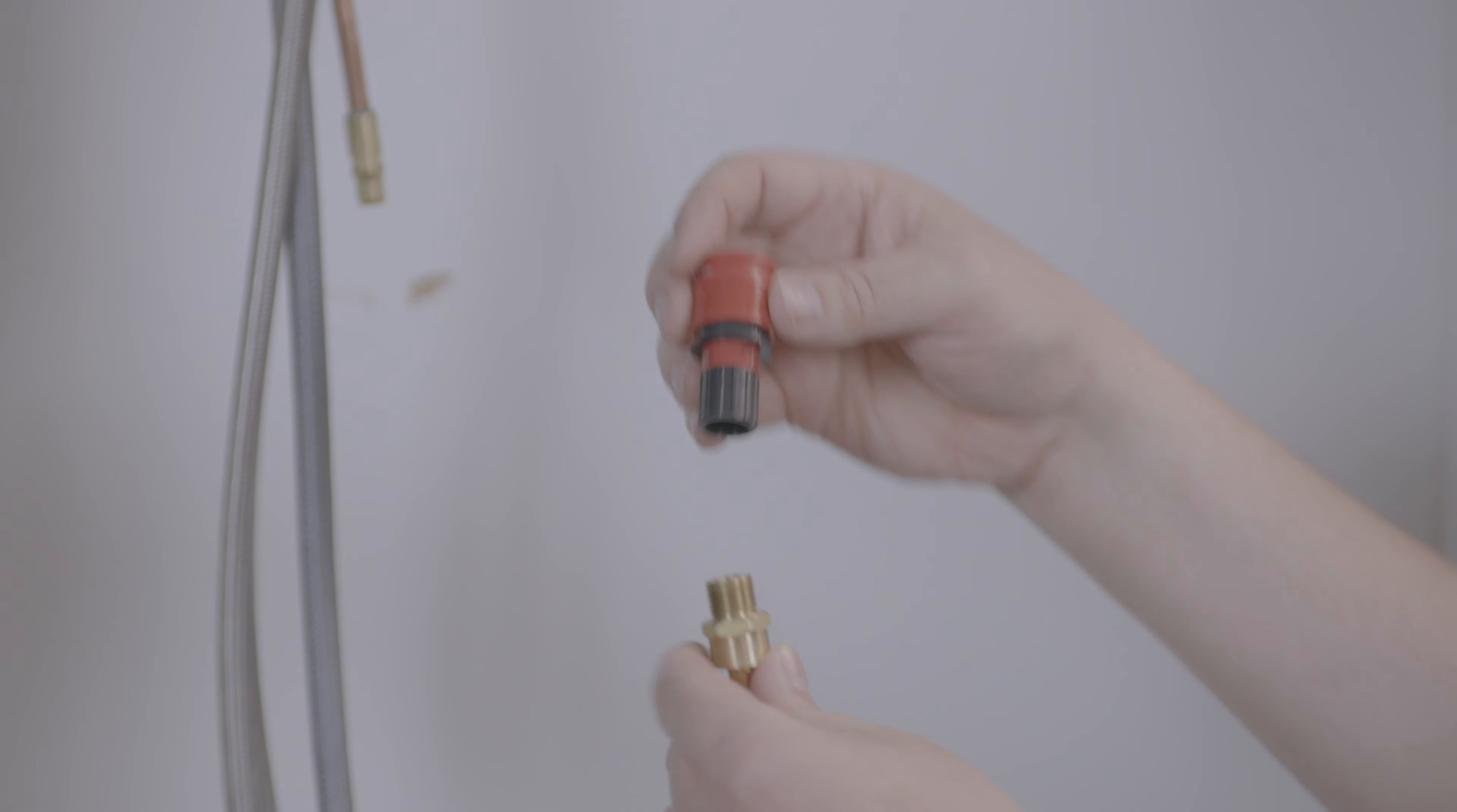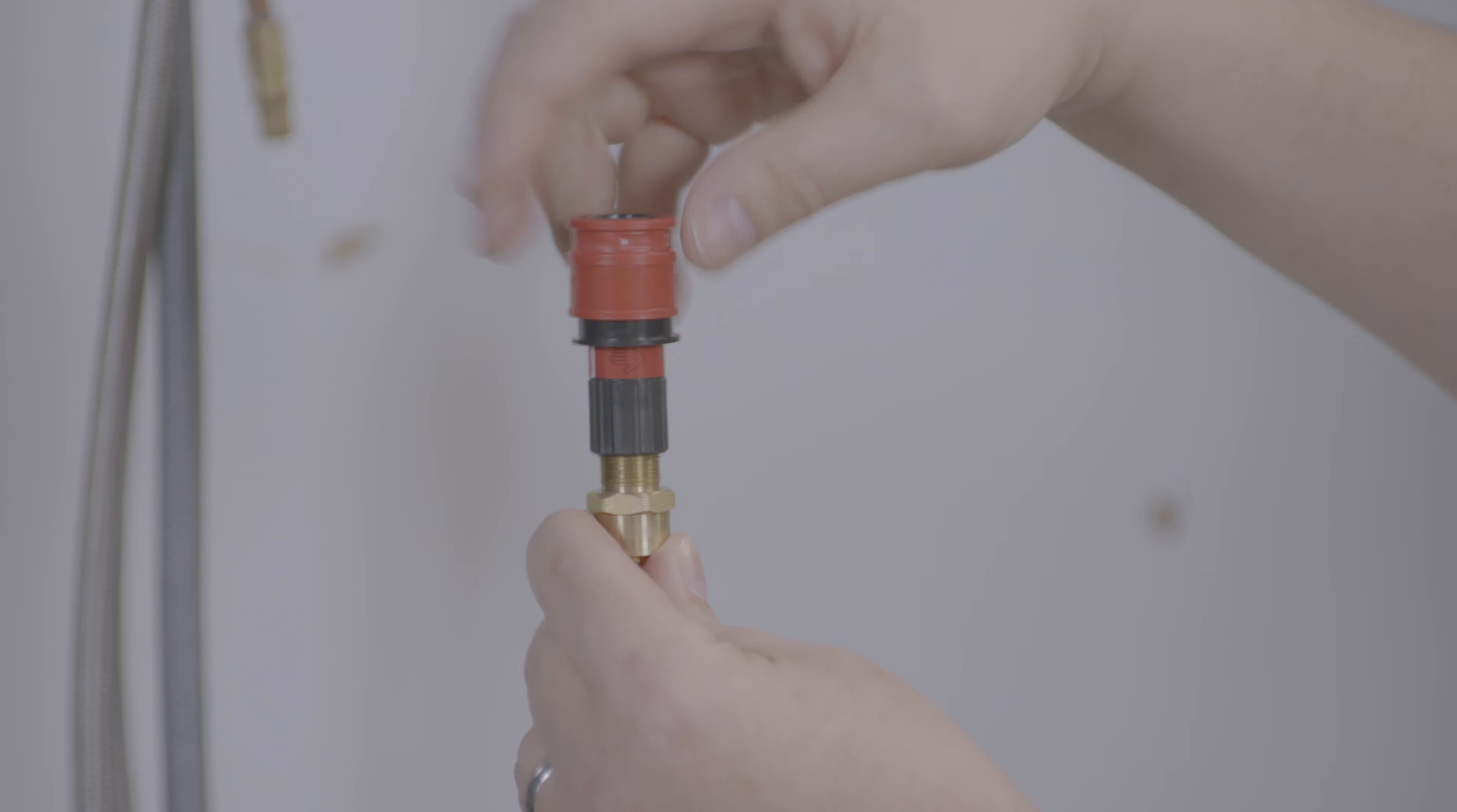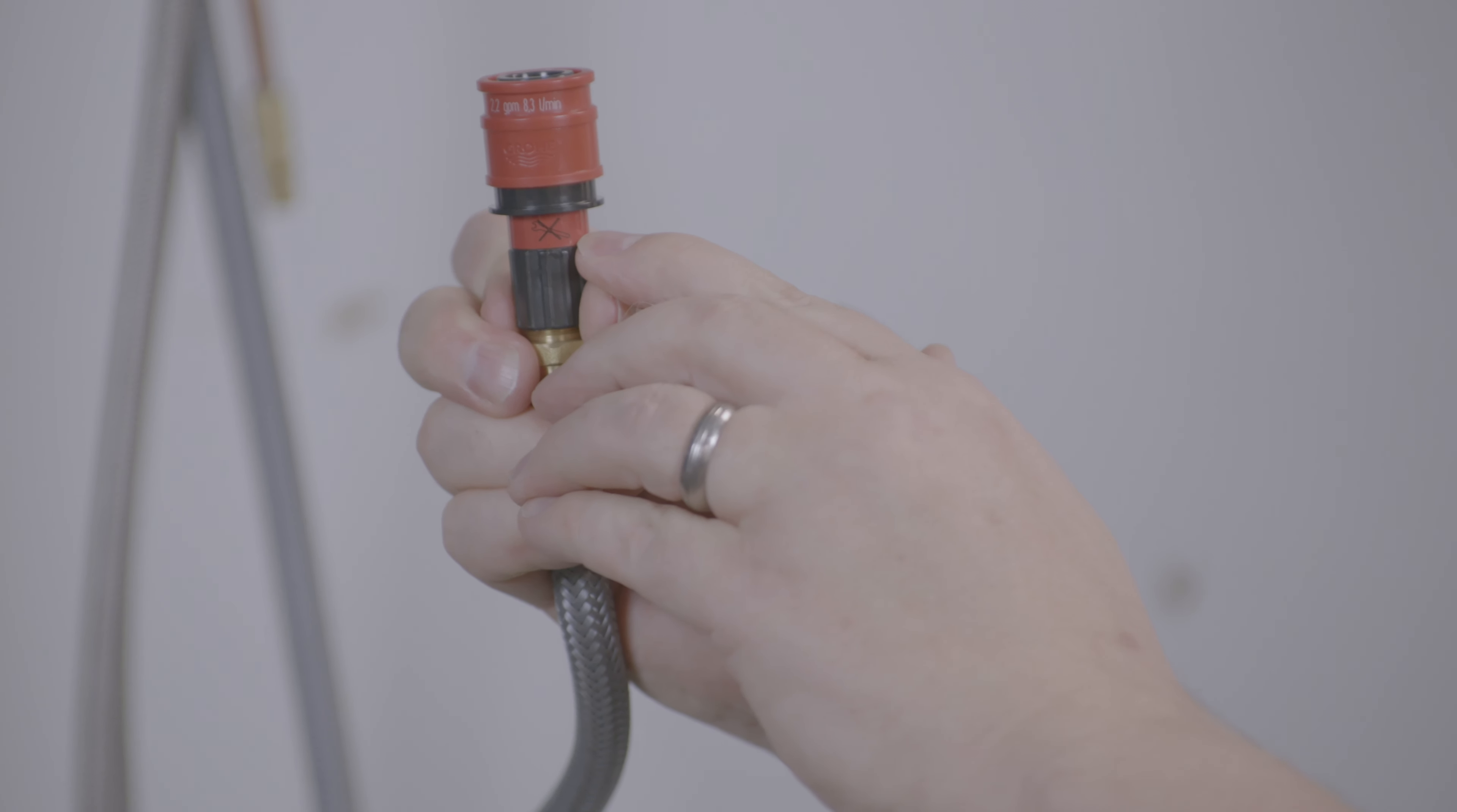To replace, and they're all interchangeable, simply thread the coupler onto the hose. Hand-tight only, and it even says it on the coupler, no tools required.